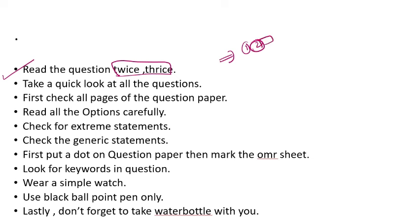There is also the problem that many students read only half a question. Because they want to solve quickly, they see a little bit of the question, think they know the answer, and fill it in fast. You must read the question two or three times. Even if you understand it on the first read, give it a second read. This is a very important tip for MCQ solving. Do not read the question wrong, do not understand only half the question, and do not fill the OMR sheet based on a half-read question.